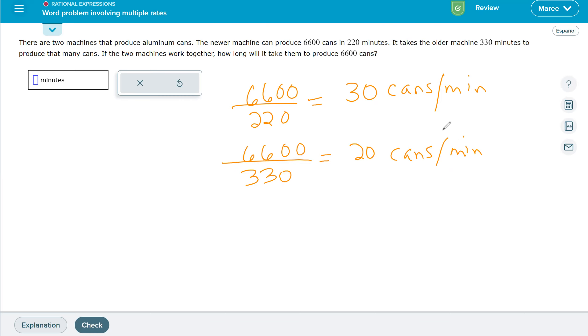If two machines work together, how long will it take them to produce 6,600 cans? When we add 30 plus 20, together they can do 50 cans per minute.